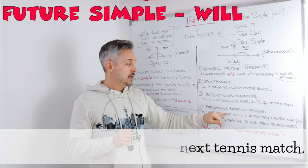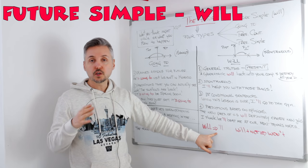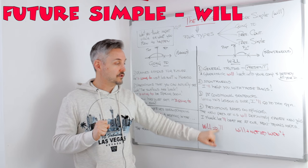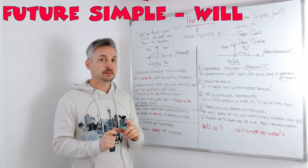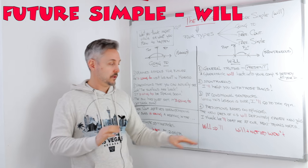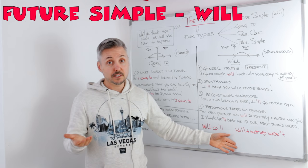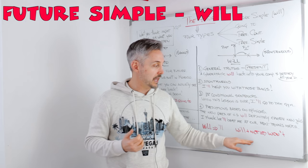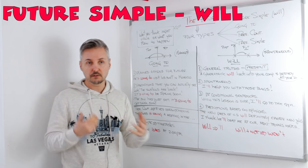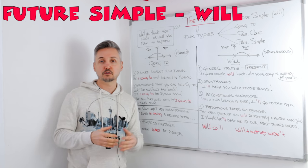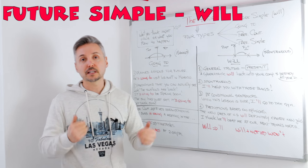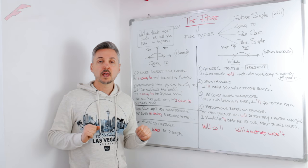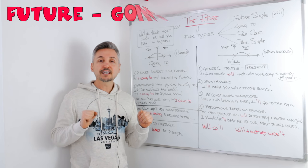Remember that 'will' is usually contracted with an apostrophe double-l — we pronounce 'I'll', 'he'll', for example. For a negative, 'will' plus 'not' is 'won't'. Okay, 'I won't do it' — if a friend tells you to do something and you refuse, you say 'I won't do it.'